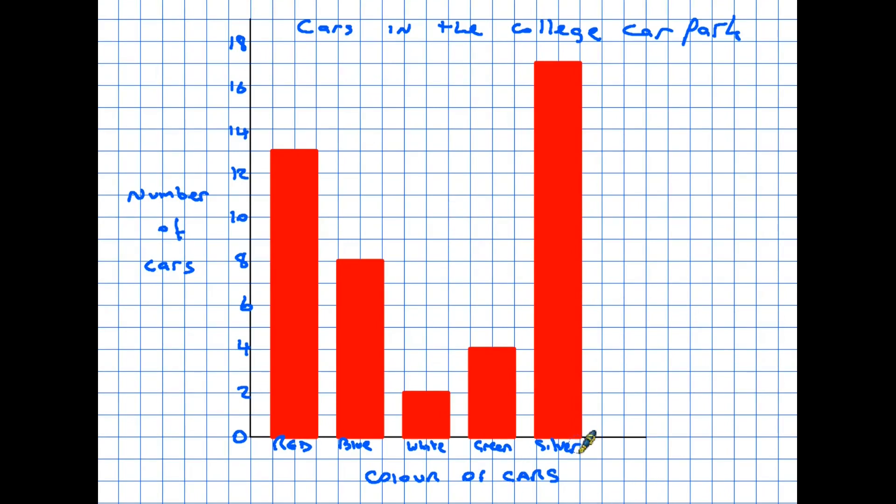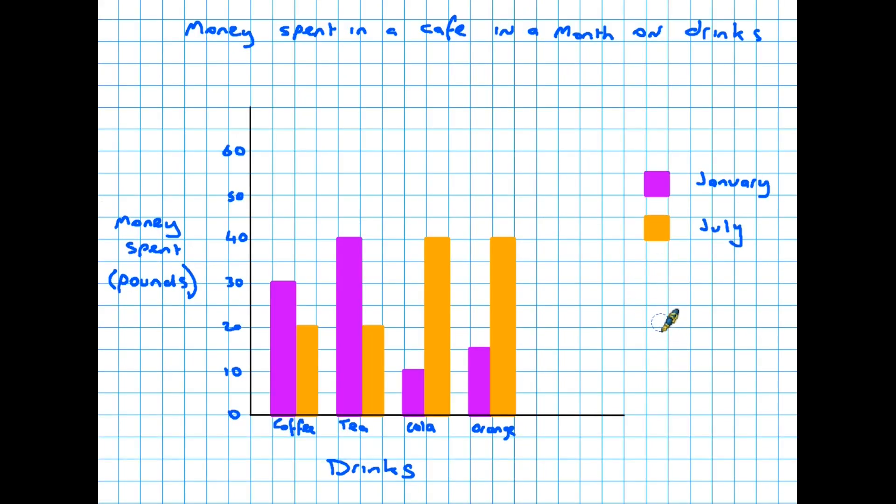Let me just take you back to the original graph for a moment. Another definition that we need to understand: this may seem quite obvious but because in this graph each of the colors of cars has one bar going up, we call this a single bar chart. Now have a look at this one. It's a bar chart, it's vertical, I've gone back to the more standard version. And if you look at the title, money spent in a cafe in a month on drinks, so we know what the graph's about. The drinks quite clearly labeled on the bottom: coffee, tea, cola and orange. And at the side we have a scale, this time it's going up in tens and it talks about the money spent.